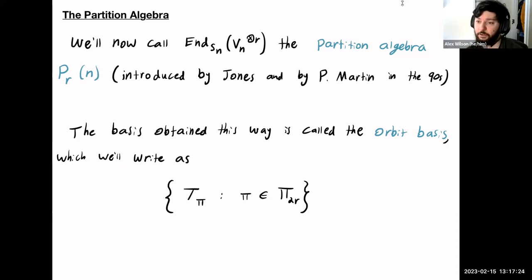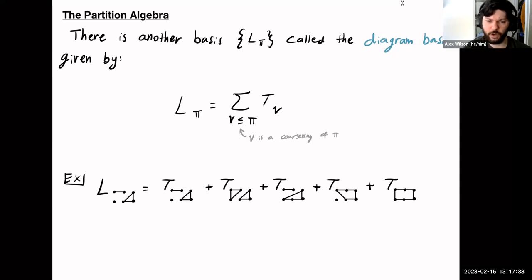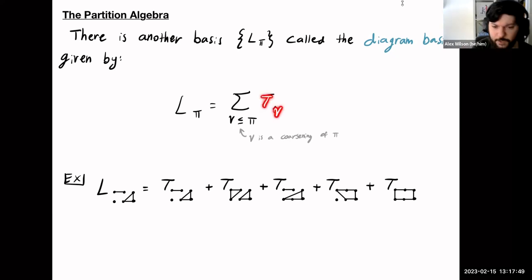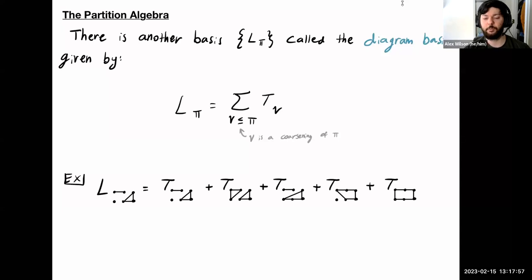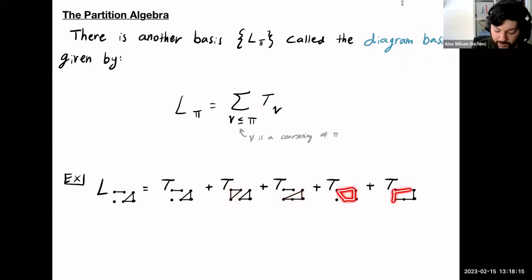Now I'm going to introduce a second basis immediately. There's a basis L sub pi called the diagram basis. It's a simple change of basis: if you want L sub pi, you take the sum over all set partitions nu that are coarser than pi, of T sub nu. The set partitions coarser than pi are all the set partitions you can obtain by combining blocks of pi. So in this example, computing L sub a given diagram gives back that same diagram, plus the diagram from combining these two blocks, combining these two blocks, combining those two blocks, or finally combining all three blocks.